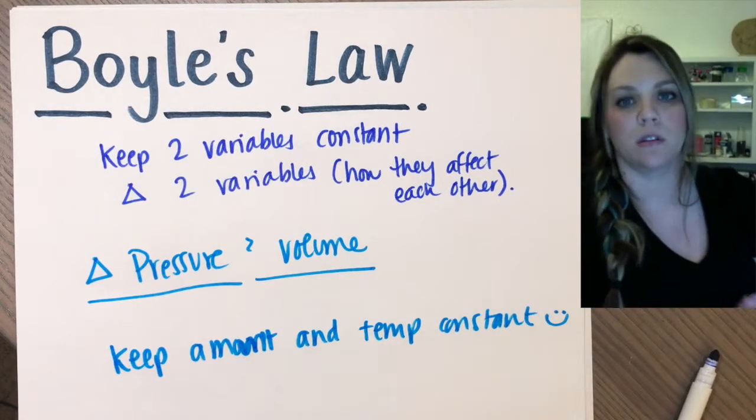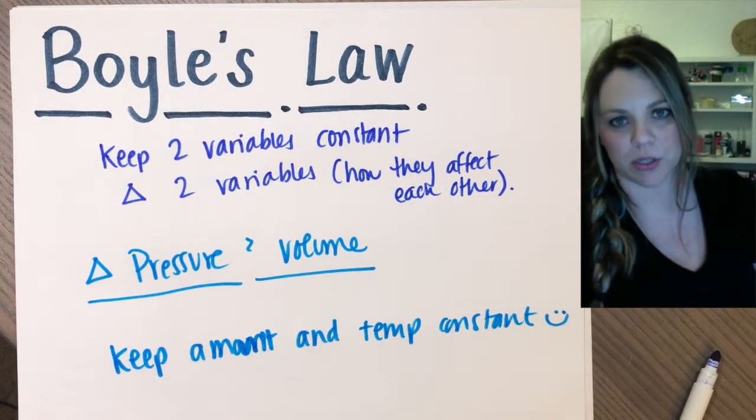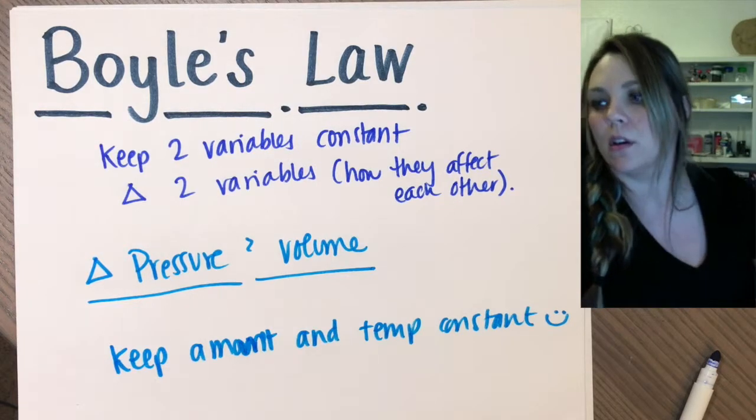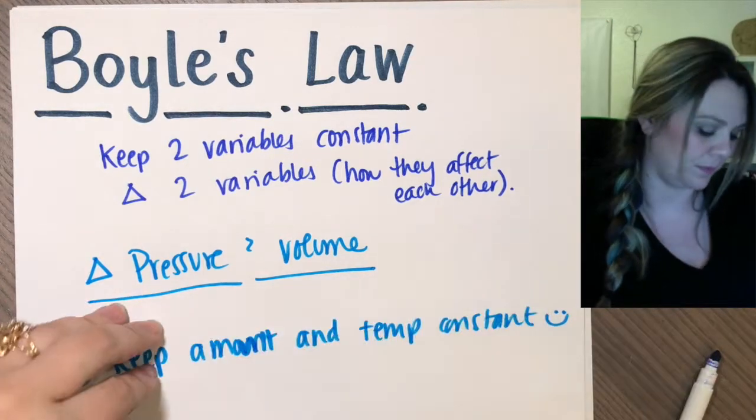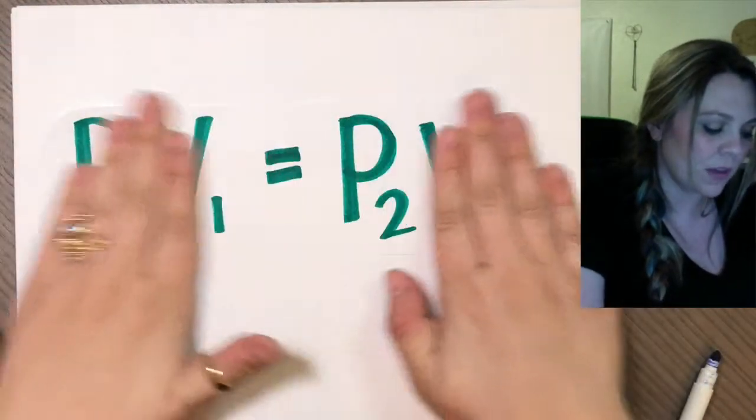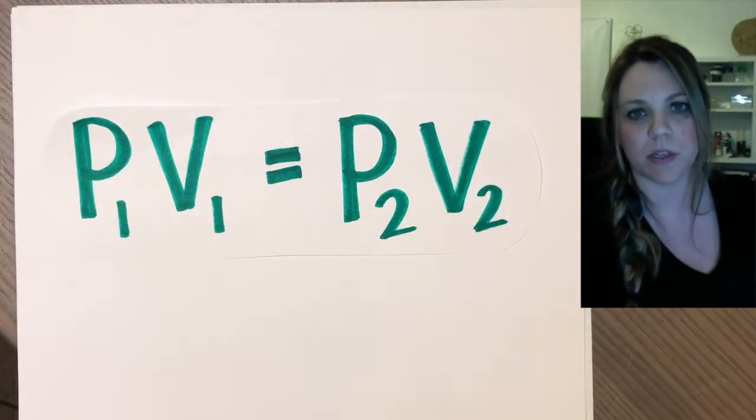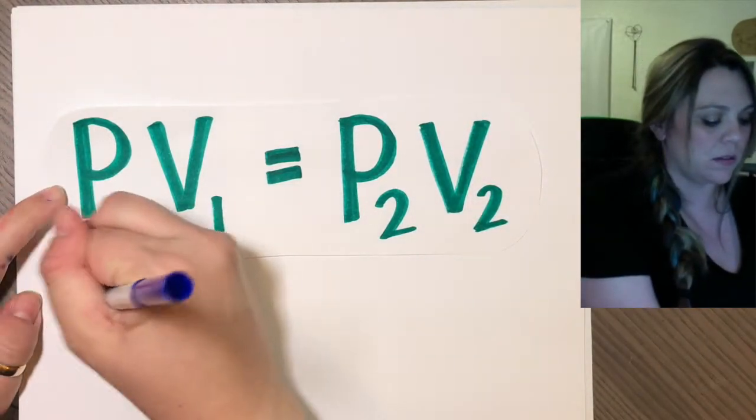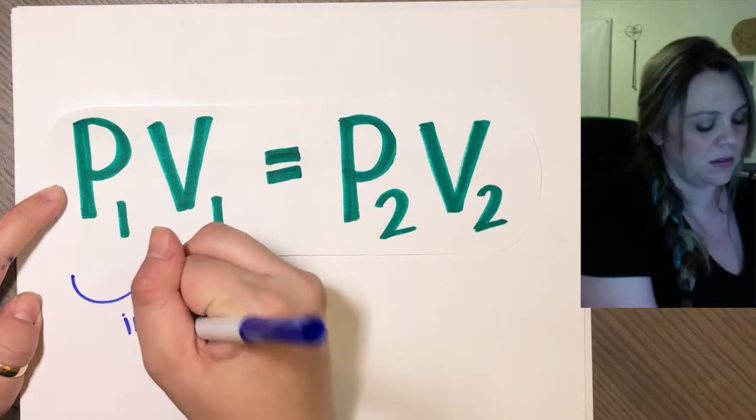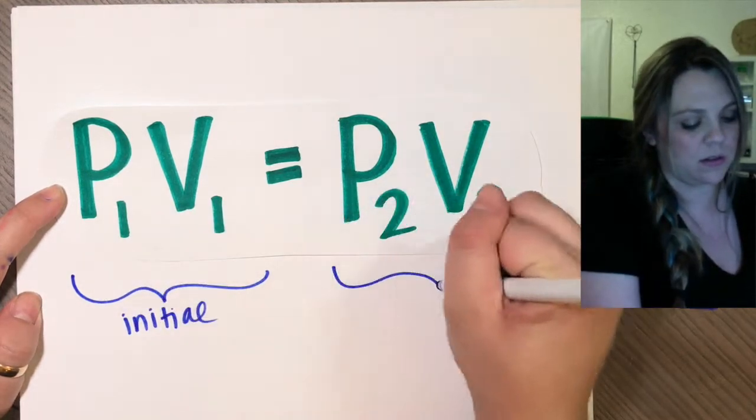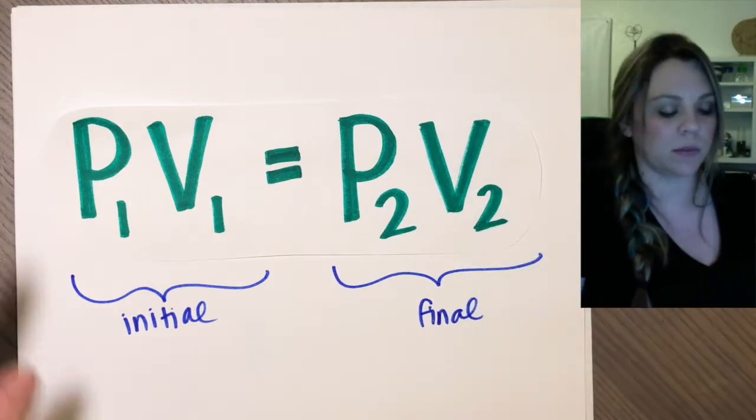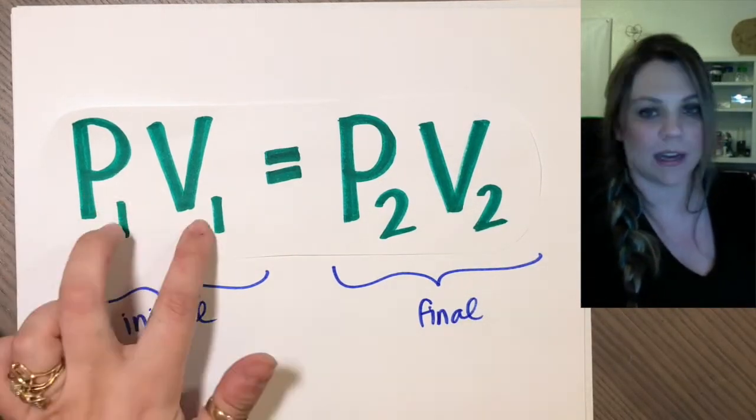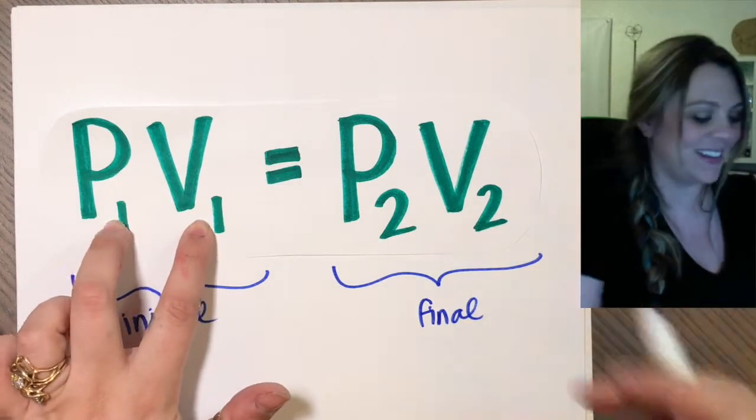So for all of Boyle's Law, I'm only changing pressure and volume. And a beautiful, giganto equation is P1V1 equals P2V2. So this is the initial conditions. This would be your final conditions. So I'm starting out with a pressure and a volume of my gas.